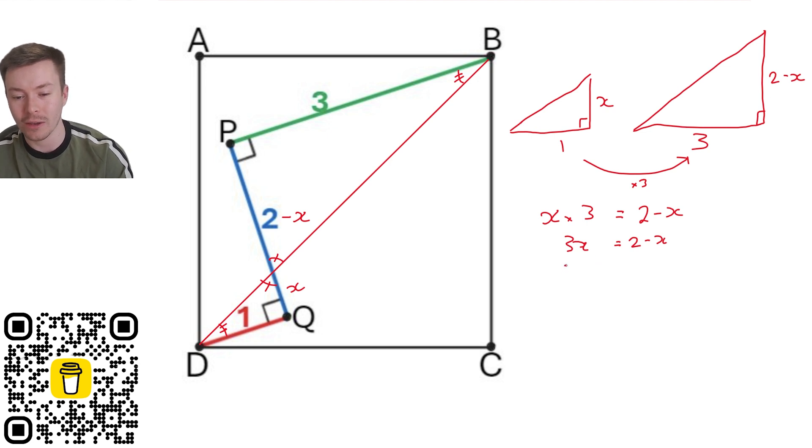A little bit of rearranging. Add X to both sides. We're going to get 4X is equal to 2. Divide by 4 on both sides and you get X is equal to 2 over 4, which is the same as a half. So we've got here X is equal to 1 half. And 2 minus X would then be equal to 3 over 2.